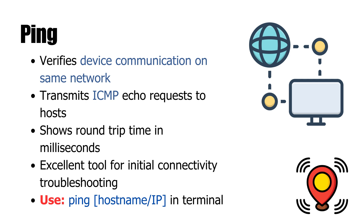The ping command is the most powerful and easiest of network utilities. It verifies whether a device is able to communicate with another device that is part of the same network. It sends small packets known as ICMP echo requests to a destination server and waits for the server to respond. If the server is responding, then everything is fine, and there is an internet connection established.